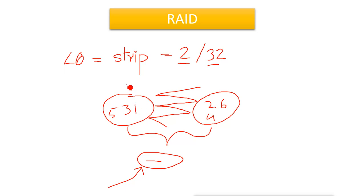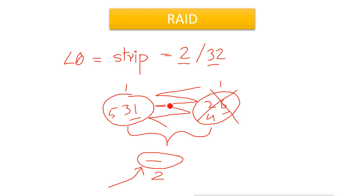RAID level 0 gives combined space — if each disk is 1 GB, you get a 2 GB partition — and also gives read/write performance. However, it does not provide redundancy. If one disk is lost, the whole data is lost because half the data is on each disk. It is only for combined space and performance, not for redundancy. For redundancy, we use RAID level 1.